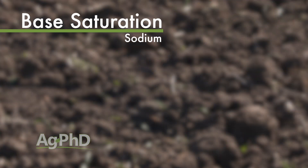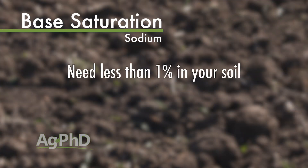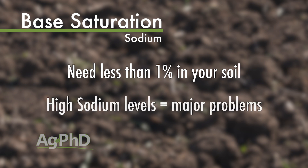That's not all crops — for example, if you want to raise blueberries, 5.5 is the ideal pH, so you're going to want more hydrogen in your soil because you want that pH down. For sodium, you want that number less than 1%. High sodium levels can cause major problems on your farm, in your soil, and in your crop. You've got to keep sodium levels down — usually good drainage takes care of that.